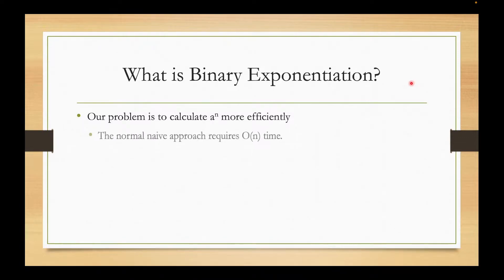The normal naive approach requires O(n) time. For example, if we want to calculate a to power n, we generally just multiply a n times in a loop and it will require more time to calculate. What this algorithm does is it can calculate the same thing in O(log n) time. Let's see how it works.